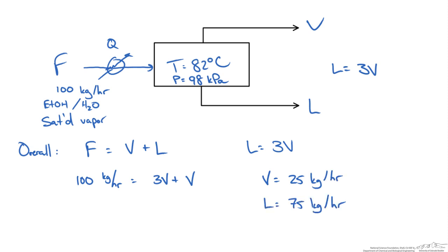However we are not given any information about the compositions. So we have to use our phase equilibrium information knowing that we have a vapor and a liquid at 82 degrees Celsius and 98 kPa. This is where the diagram comes in.